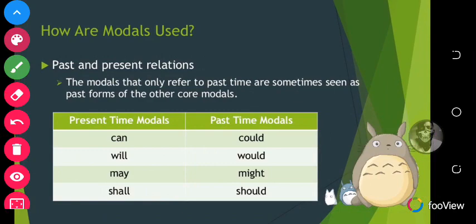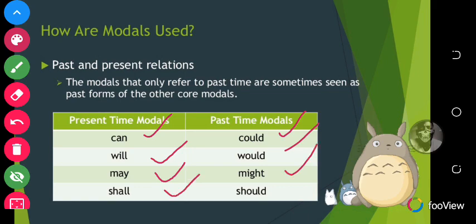Let's look at modals in their past tense and present forms. 'Can' is the present form and 'could' is the past form. 'Will' in the present, 'would' in the past. 'May' in the present, 'might' in the past. 'Shall' in the present, 'should' in the past. So these are modals in their present and past forms.